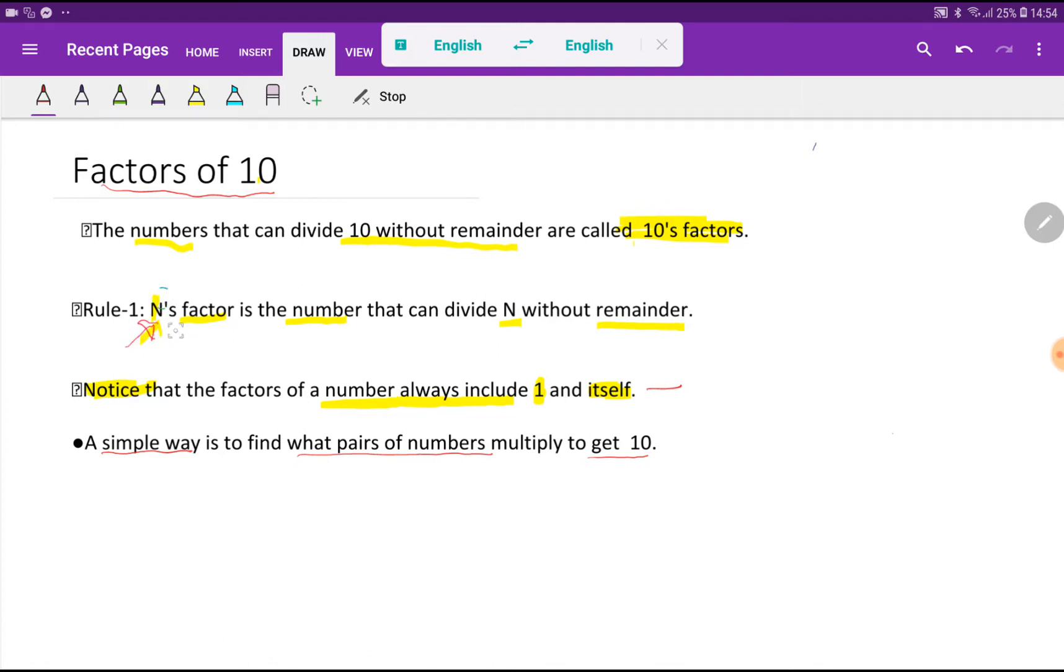Here is a number n. So n's factor is the number, factor is a number, that can divide n without remainder.